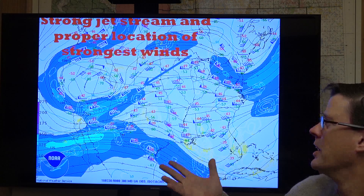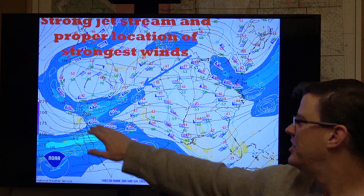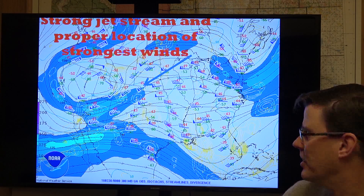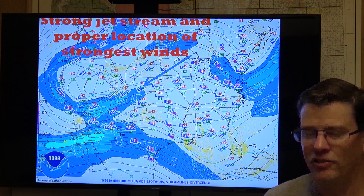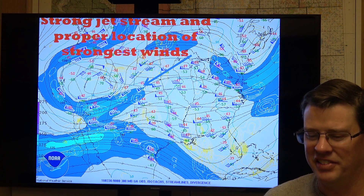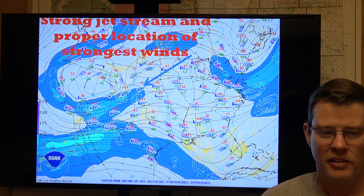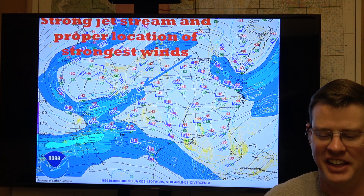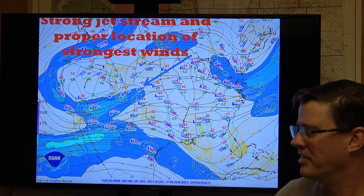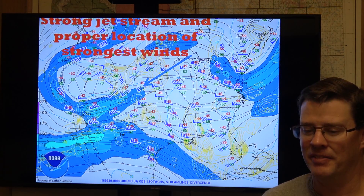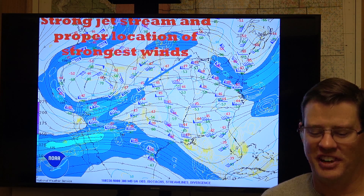Another thing we look at is upper-level dynamics — this is the jet stream chart, about 30,000 to 34,000 feet up in the atmosphere. You can see the jet, this blue area here. There are two areas we look for as the best snow producers: the left-front quadrant and the right-rear quadrant. Just picture it like driving the jet stream — the left-front quadrant would be the driver's seat, and the right-rear quadrant would be the back passenger seat on the right. Wyoming is pretty close to that left-front quadrant of the jet right there. It also helps enhance upper-level lift. There's a lot of math that goes along with it involving calculus — it gives me nightmares just thinking about it. Quite frankly, I forgot a lot of it since it was 20 years ago, but we'll leave it at that.